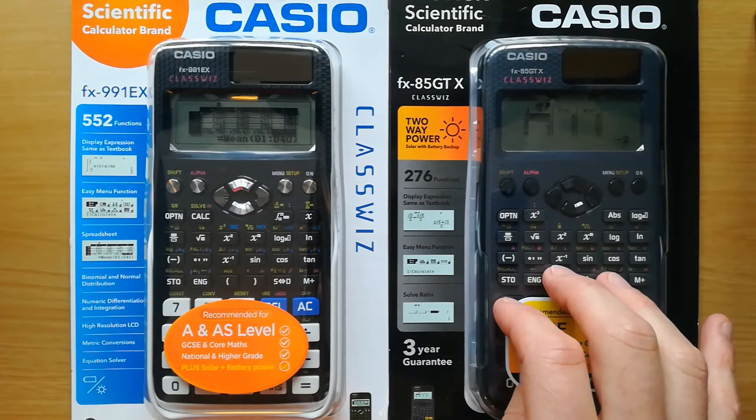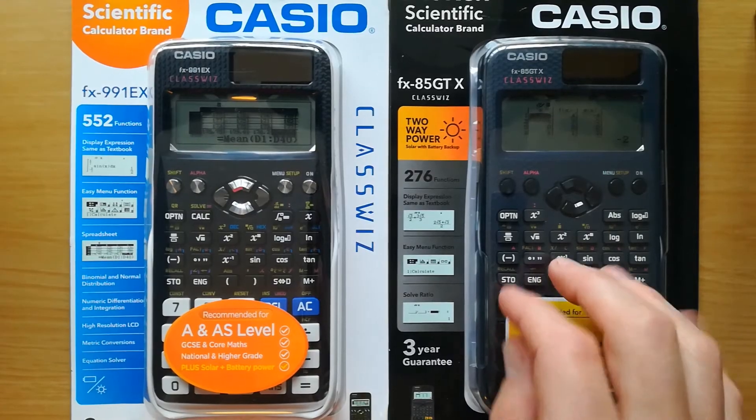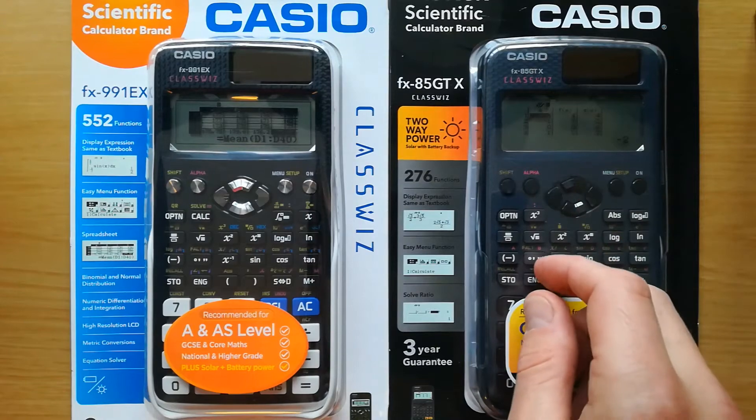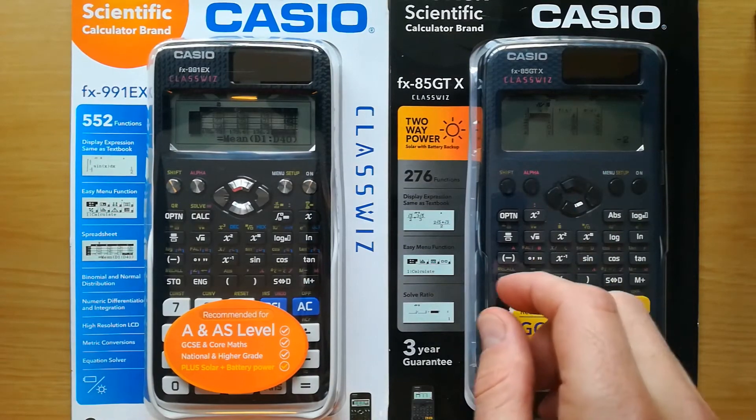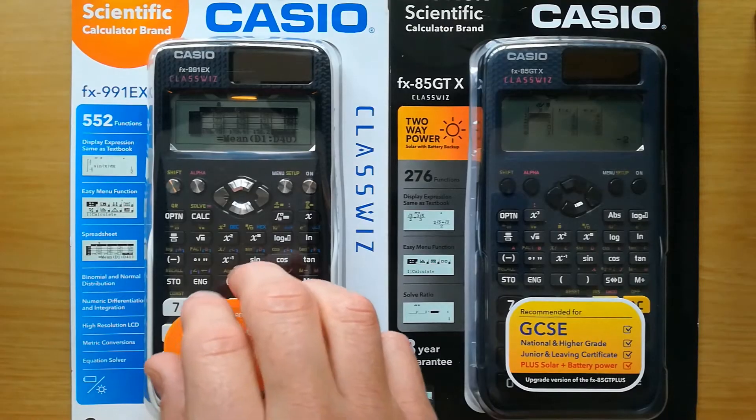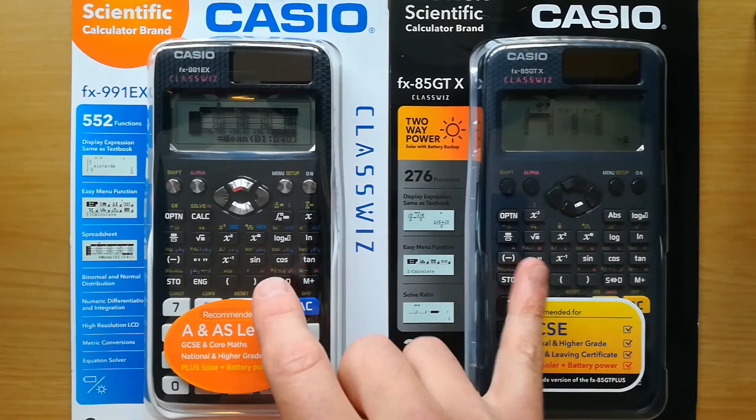The Casio FX85. You might have the 83, that's basically the same as the 85 but without the solar panel. Or if you're working on A-level, you're likely to have the FX991.